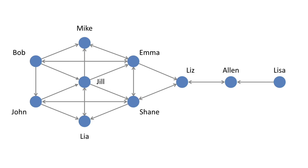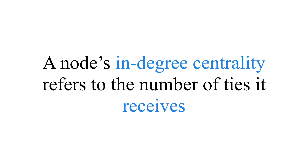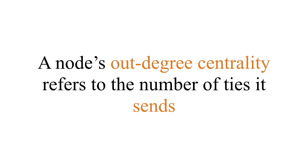However, if we look at the directionality of the network — if we have a network with directed ties — we can do a subsequent analysis. We can look at in-degree centrality and out-degree centrality. In-degree centrality is a measure of how many ties a node is receiving, and out-degree centrality is a measure of how many ties a node is sending out.